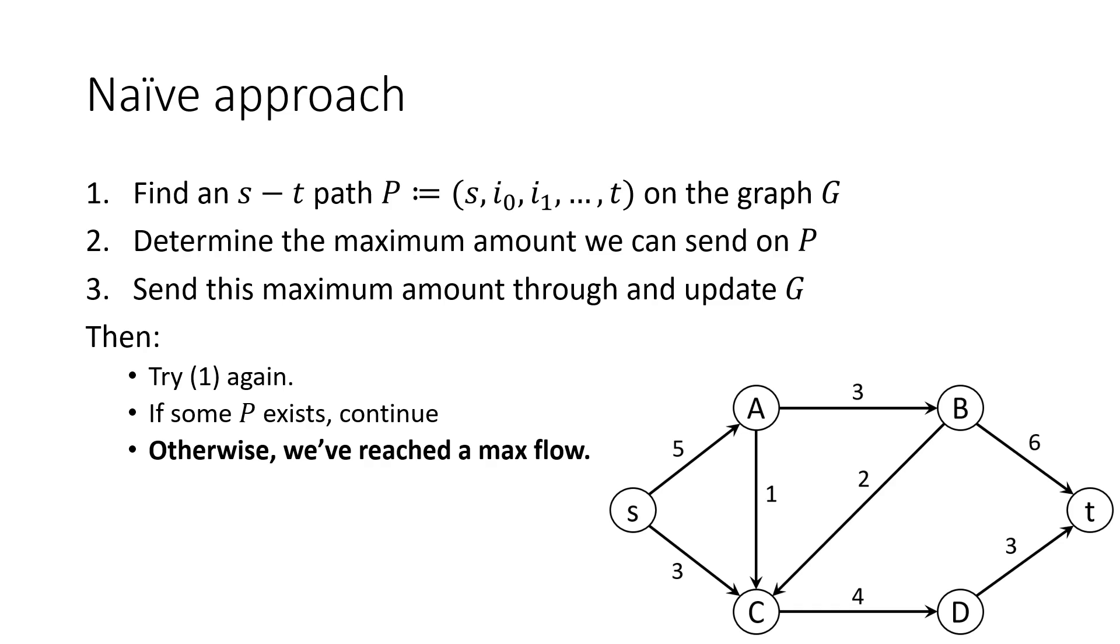To begin, let's consider the naive approach that someone might come up with when first looking at the graph. All this approach does is find a path from S to T, and push as much flow through it as possible. If it's not possible to find any more of these paths, it says that we have reached a maximum flow. We'll work through this approach, and we'll see when it works, when it doesn't work, and how to correct it.